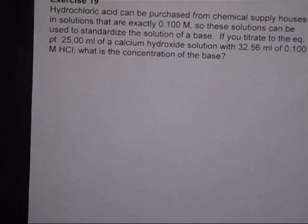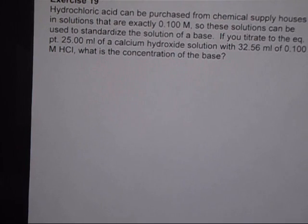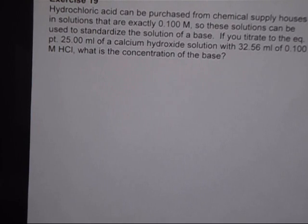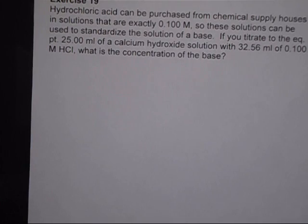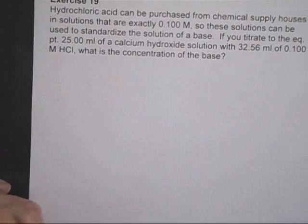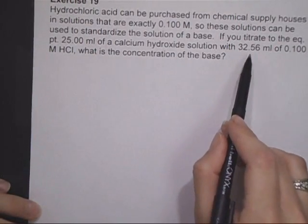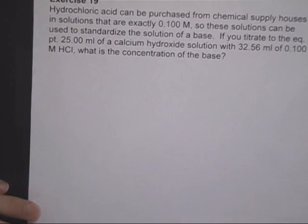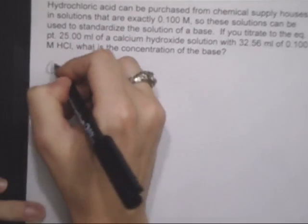On to exercise 19, still doing titration here. Hydrochloric acid can be purchased from a chemical supply house in solutions that are exactly 0.1 molar. So then we want to use that to standardize the solution of a base so we know exactly how concentrated it is. If you titrate to the equivalence point, 25 milliliters of a calcium hydroxide solution with this volume of the acid solution, what is the concentration of the base. So very first step that we need to do, we need an equation.